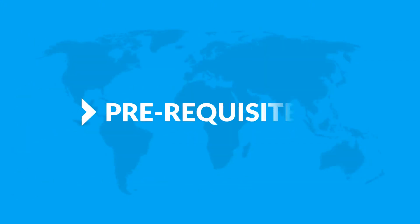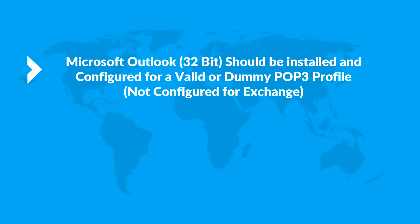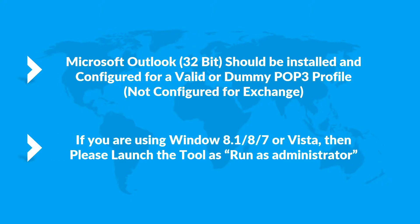Now let's check out the prerequisites before installing the software. Microsoft Outlook should be installed and configured for a valid or dummy POP3 profile, not configured for Exchange. And if you are using any of the Windows versions mentioned here, please launch the tool as Run as Administrator.